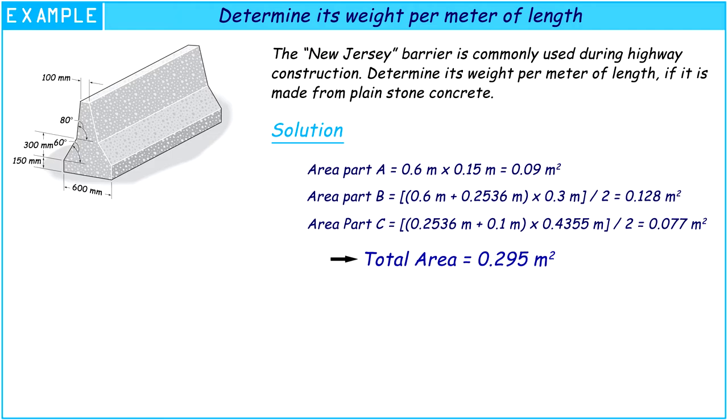After we knew the area, we need to know the density of the New Jersey barrier. From the story above, we noted that the New Jersey barrier is made from plain stone concrete.